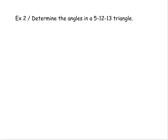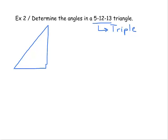In our next example, we're asked to determine the angle measures in a 5-12-13 triangle. You'll recognize that 5-12-13 is one of the Pythagorean triples, which means this is definitely a right triangle. Let's sketch the diagram: opposite the 90-degree angle is 13, the hypotenuse, with legs of 5 and 12. One missing angle is the 90-degree angle — we already know that. We still need to find this missing angle x and this missing angle y.